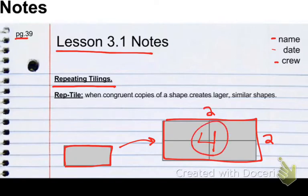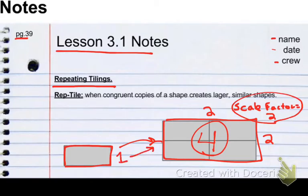So even though we've made four copies of it, its scale factor is equal to 2. Because if we take a congruent side, we went from 1 to 2, it has a scale factor of 2. But basically, it means making a larger version of a shape using copies of itself.